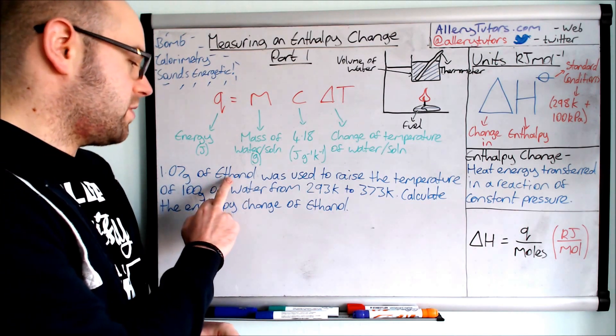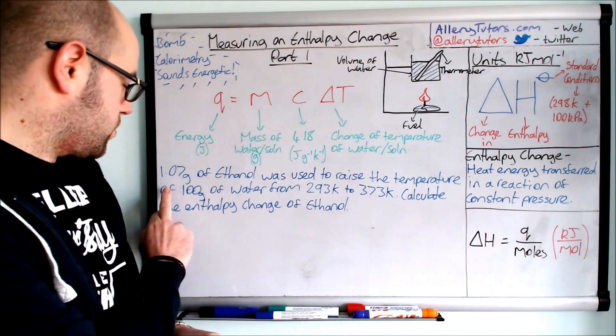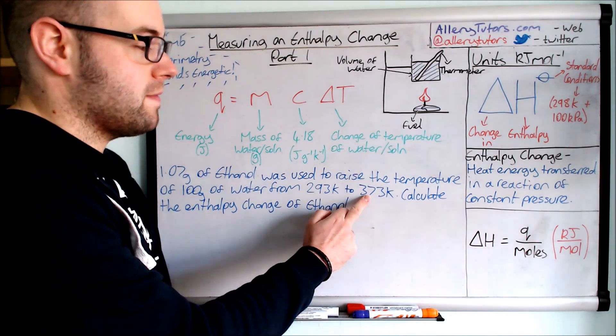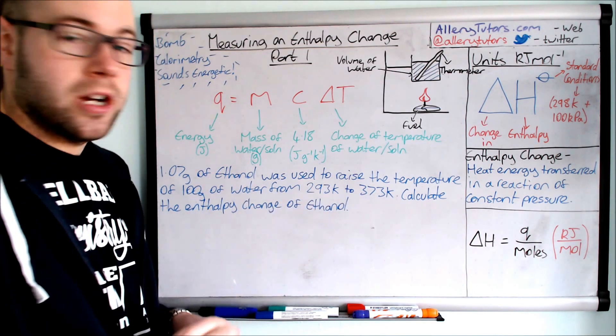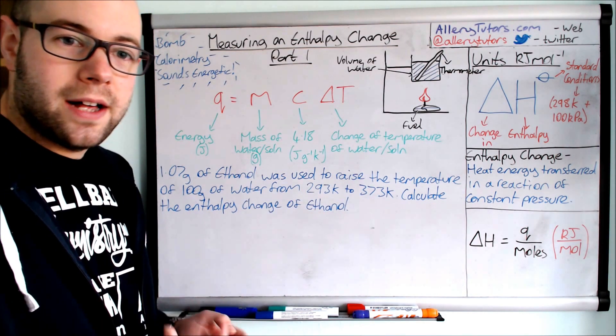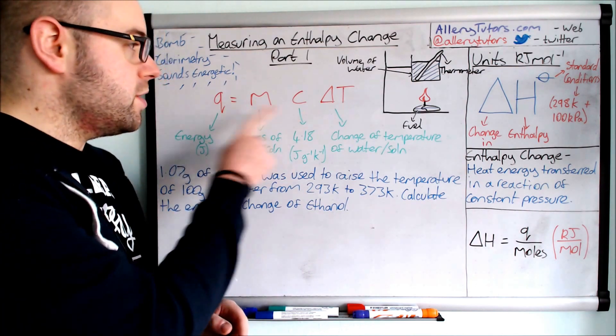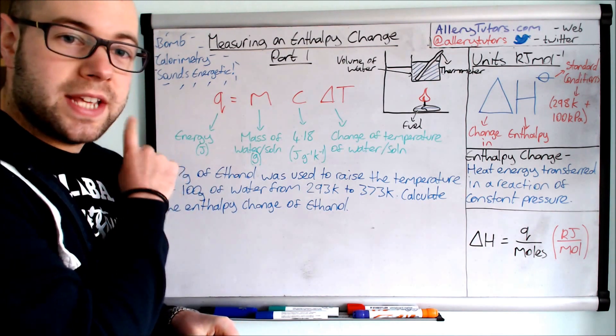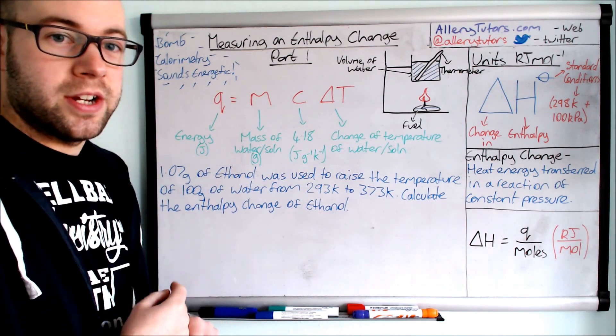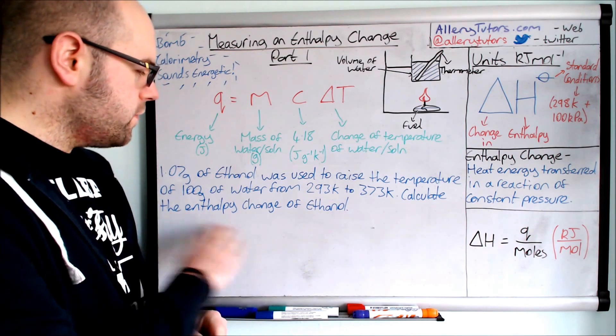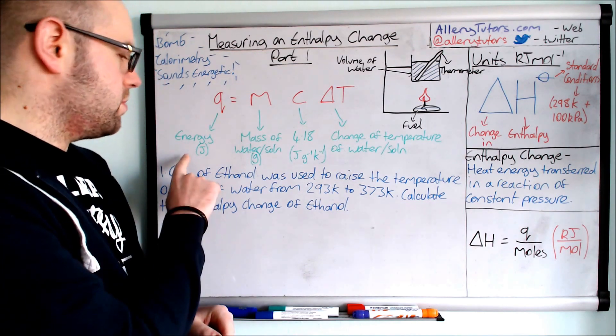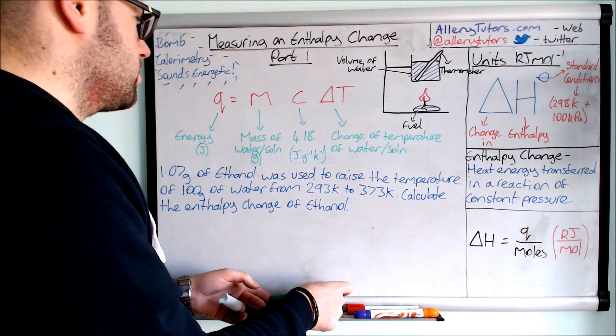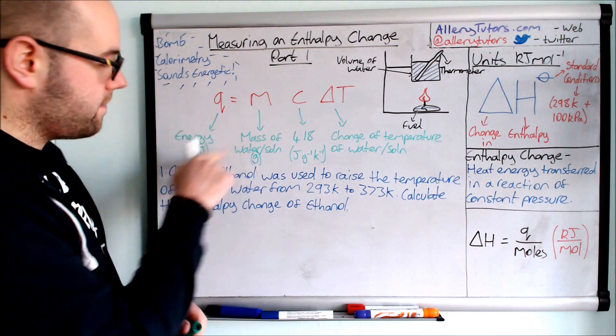We'll look at this example here. We've got 1.07 grams of ethanol was used to raise the temperature of 100 grams of water from 293 kelvin to 373 kelvin. We want to calculate the enthalpy change of ethanol. Now we can't calculate the enthalpy change, which is delta H, by using q equals mc delta t directly. Remember q is only telling us the energy, not the enthalpy change, and there's a big difference between that. So first of all what we need to do is we need to work out energy first.